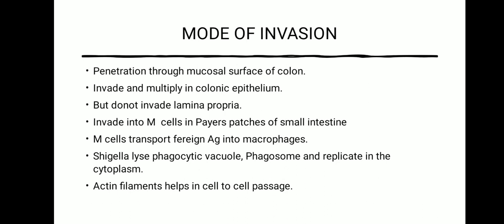Next, we will see the mode of invasion. The organism enters through the fecal-oral route by consuming contaminated food, and makes its entry into the colon. After entry into the colon, it penetrates through the mucosal surface of the colon, then invades and multiplies in the colonic epithelium, but does not invade the lamina propria. They then invade into M-cells in Peyer's patches of the small intestine. The M-cells transport foreign antigen into macrophages. Since Shigella is encapsulated, it lyses the phagocytic vacuole, that is phagosome, and replicates in the cytoplasm. Actin filaments help in cell-to-cell passage.